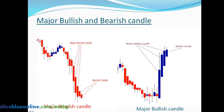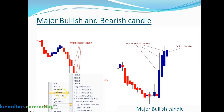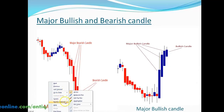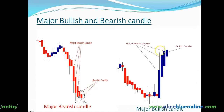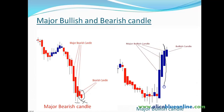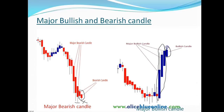Regarding major bullish and bearish candles — as seen in the picture, the three bearish candles and the last two are recognized as bearish candles because they are not able to break out the previous lower point. Similarly, the three major bullish candles and the last are recognized as bullish candles because they are not able to break out the previous higher low point.